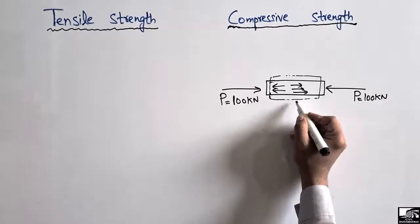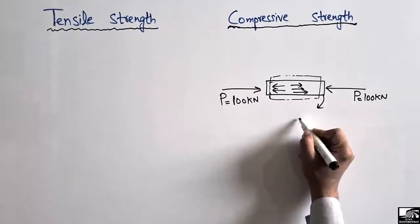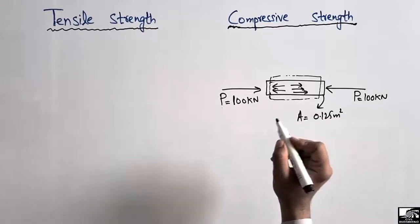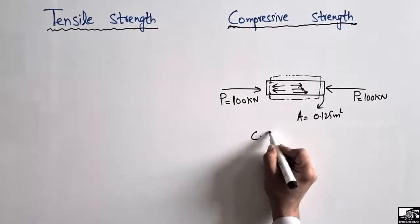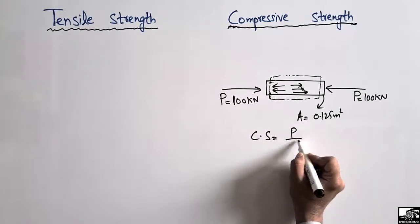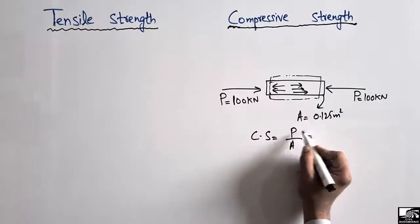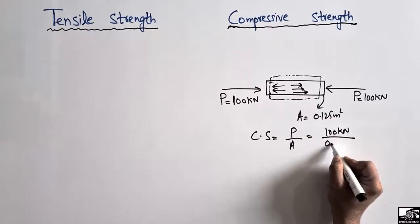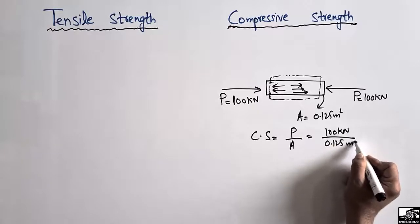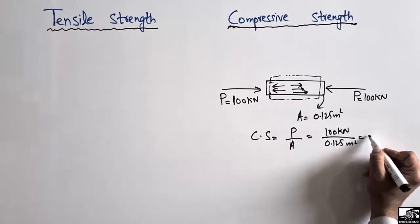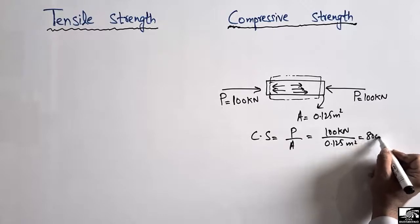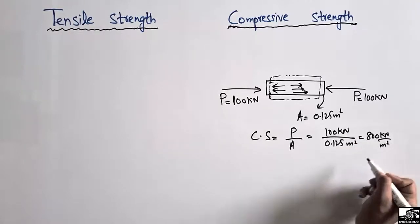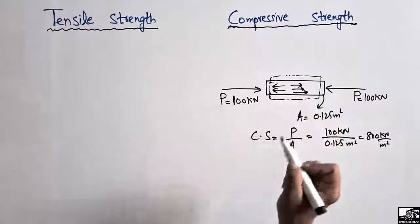The compressive load applied is 100 kN, and the original area of this material is 0.125 square meters. So the compressive strength equals force divided by area: 100 kN divided by 0.125 square meters, which equals 800 kN per square meter. This is the compressive strength of this steel rod.